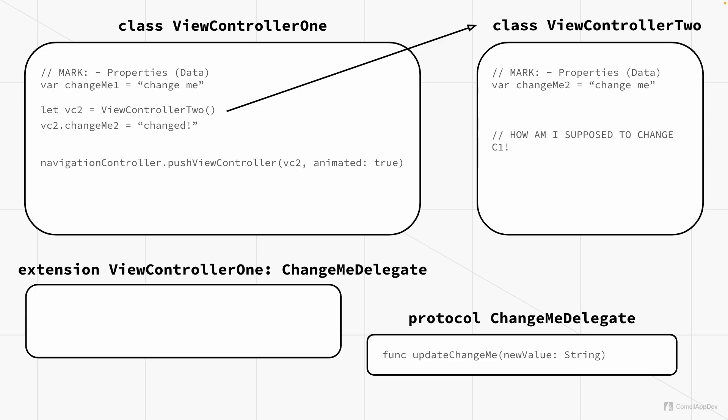The next step is to implement the function. We implement updateChangeMe and we set self.changeMe1 equal to the new value. Self refers to the class, so self.changeMe1 refers to changeMe1 up there. We take in the new value and then we set changeMe1 to the new value.